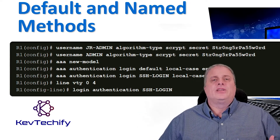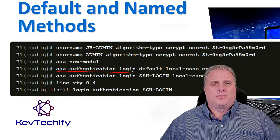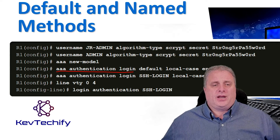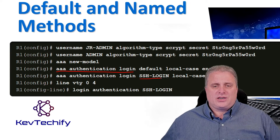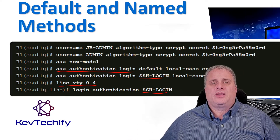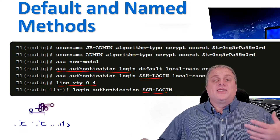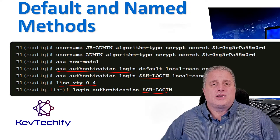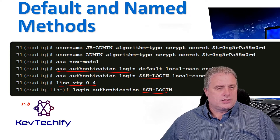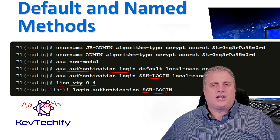For flexibility, different method lists can be applied to different interfaces and lines using the AAA authentication login command. The named list must be explicitly enabled on the line using the login authentication line configuration command. Once you create this authentication method list, you have to explicitly apply it in your interface configuration. If a line has a custom authentication method list applied to it, that method list overrides the default method for that interface. It's possible to return to the default method list by issuing the no authentication login command.